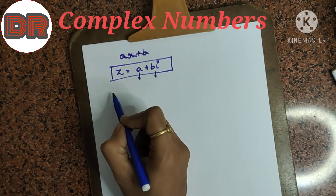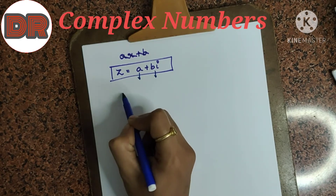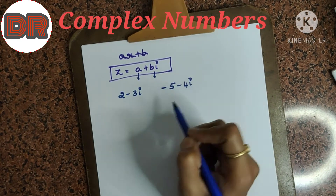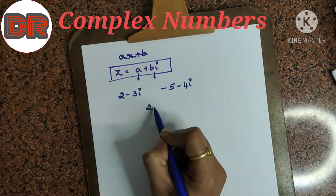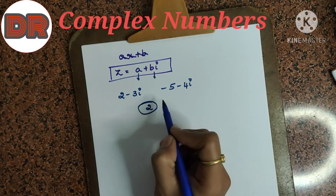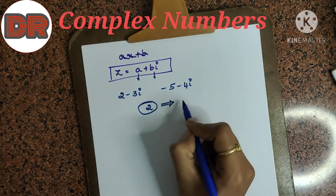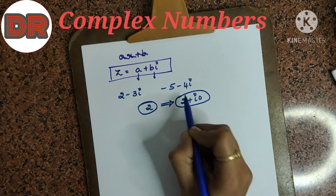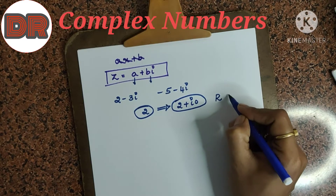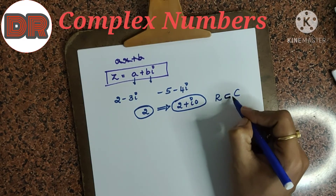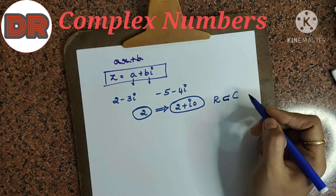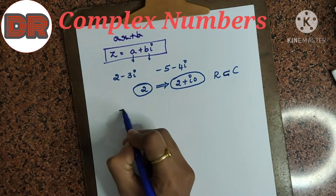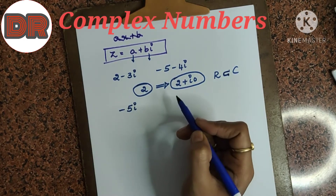We can take any example. 2 minus 3i is a complex number. Similarly, minus 5 minus 4i is also a complex number. And 2 is also a complex number — because it has a real part and can be represented as 2 plus i·0 where the imaginary part is 0. Real numbers are a subset of complex numbers, so all real numbers can be defined as complex numbers. Similarly, a pure imaginary number is also a complex number.